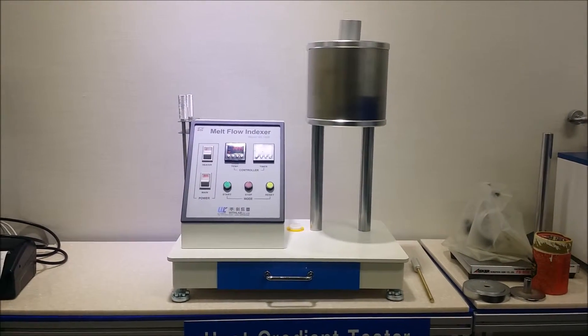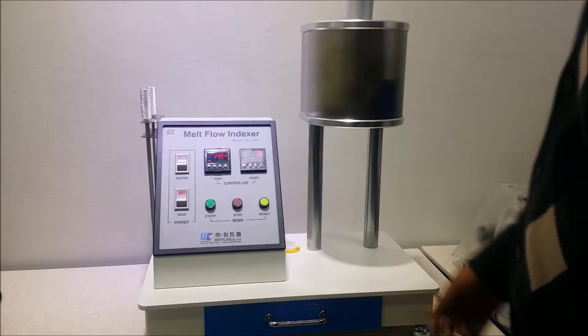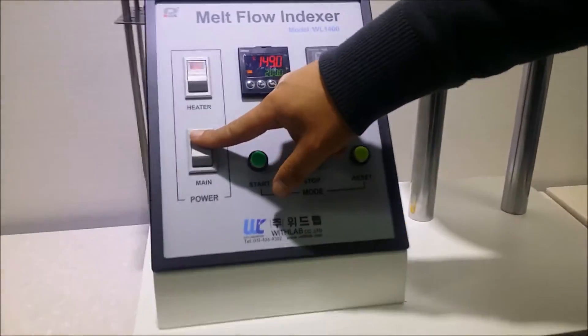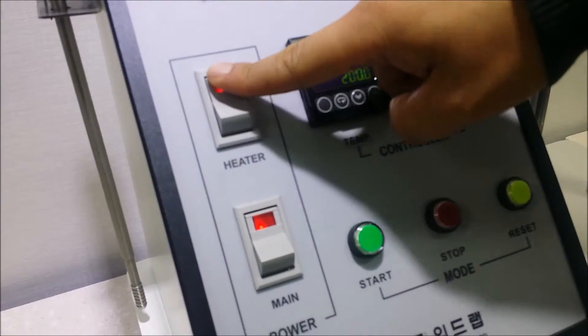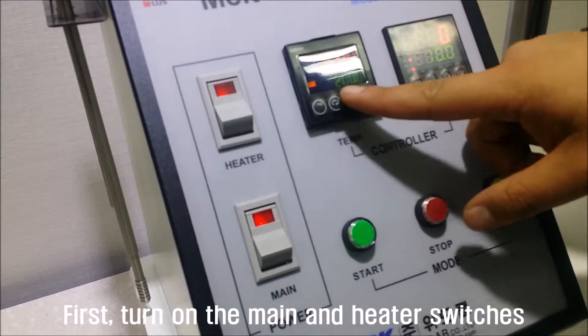Instructions on how to use the melt flow indexer. First, turn on the main and heater switches.